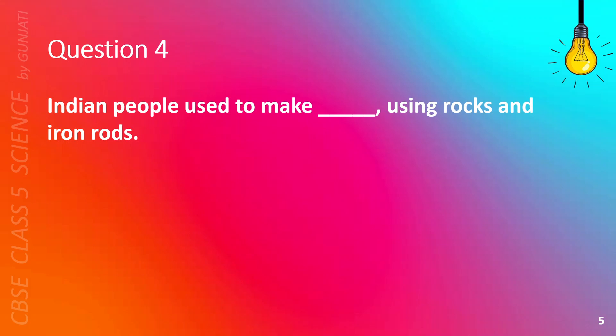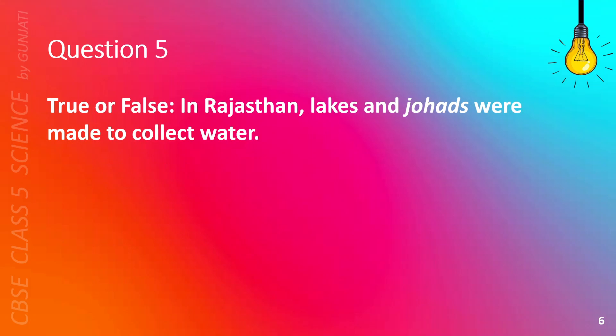Question 4. Indian people used to make blank using rocks and iron rods. A. Chabutiraz, B. Spices, C. Food, or D. Wells. The correct answer is A, Chabutiraz.